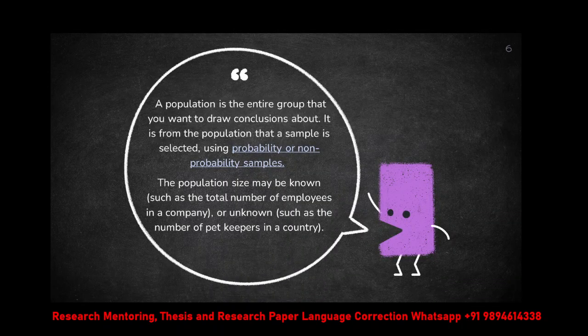The population, as you know, is a whole lot of people. There are two types: known population and unknown population. Known population — for instance, if you know the total number of employees in a company you are going to study, that is a known population. Unknown population means, such as the number of pet keepers in a country — if you want to study the emotional level of pet keepers in India, the numbers will definitely be infinite. You will not be able to know that. From this unknown population, you need to decide the sample — that is the real challenging part.